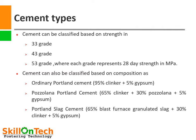All cement prepared in these mills is not the same. Cement can be categorized based on strength: 33 grade, 43 grade, and 53 grade, where each grade represents 28-day compressive strength in megapascals. Cement can also be classified based on composition, such as OPC — Ordinary Portland Cement — which has 95% clinker and 5% gypsum, and PSC — Portland Slag Cement — which has 65% blast furnace granulated slag, 30% clinker, and 5% gypsum.